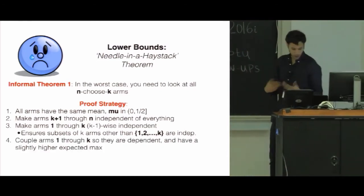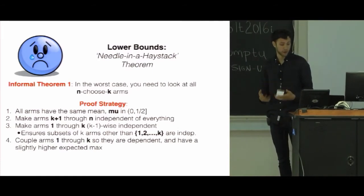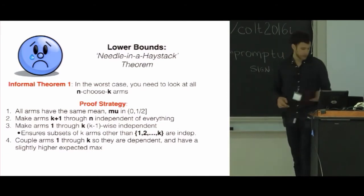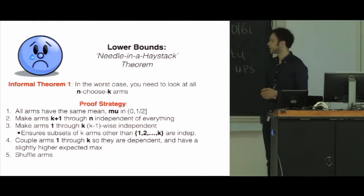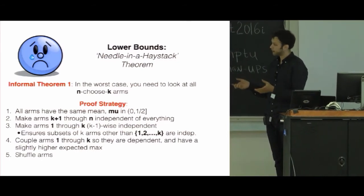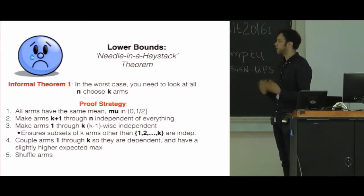Finally, what you're going to do is you're going to couple the first arms, 1 through k, so that they are dependent. And they have a slightly higher expected max than you would assume for independent arms. And then lastly, you're just going to shuffle everything so you don't know which the dependent set is. And then you'll find that every subset of arms, except the best one, are identical and you gain no information.